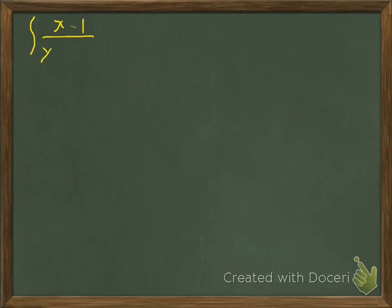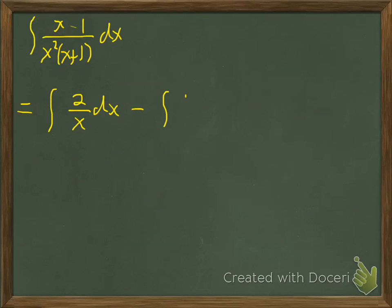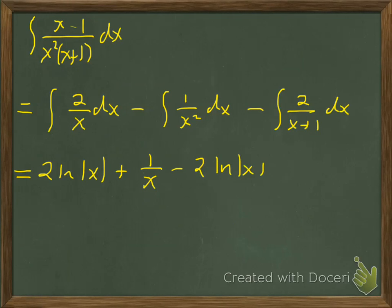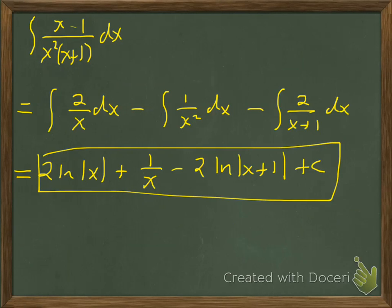So the integral of (x−1)/[x²(x+1)] dx, using partial fractions, is the integral of 2/x dx minus 1/x² dx minus 2/(x+1) dx. That gives 2ln|x| + 1/x − 2ln|x+1| + C. Partial fractions can get trickier, but this is essentially the strategy. Like most things in math, it just takes practice.